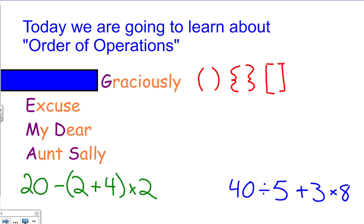You're going to look for those and do those things first whenever you're solving a problem. Next we have excuse, and the E in excuse actually stands for exponents. You want to do the exponents after you do all the grouping symbols, and everything within the grouping symbols should also abide by the order of operations.